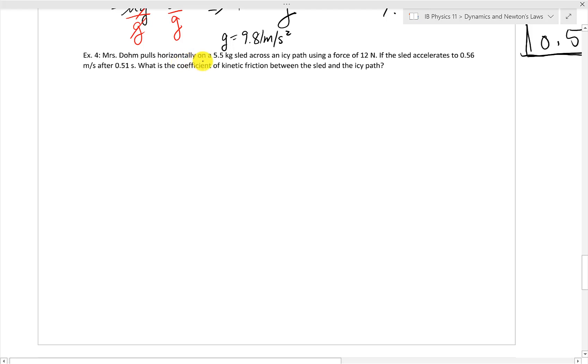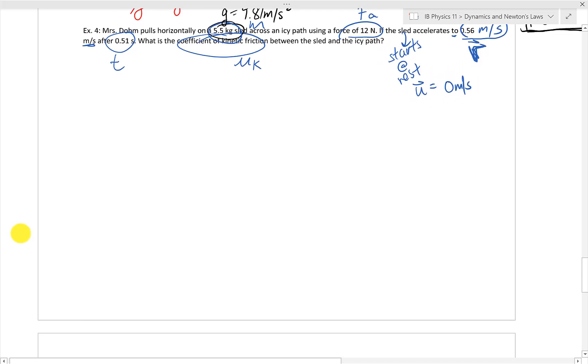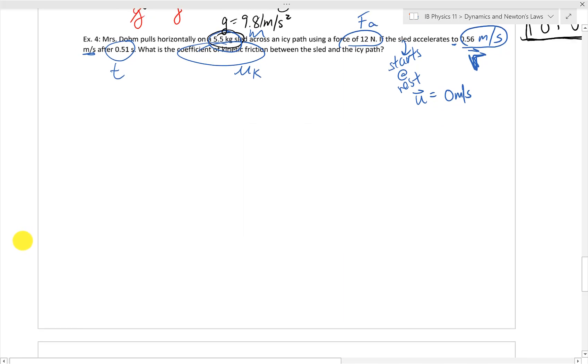Okay, so let's read this problem together just to make sure we have a sense of it. Miss Stone pulls horizontally on a 5.5 kilogram sled, which is going to be our mass on an icy path using a force of 12 newtons. That's our applied force. If the sled accelerates to 0.56 meters per second, so notice that this is a meters per second, this is a speed. And it sounds like it's accelerating to this speed, which it's telling us this is the final velocity here. After 0.51 seconds, that's the time, what is the coefficient of kinetic friction between a sled and the icy path? So you're looking for the mu k, coefficient of kinetic friction. And let's see, the problem doesn't state this, but you can assume that a sled starts off at rest, which then tells you the initial velocity is what? But yes, it's 0 meters per second, okay? So don't forget to draw a free body diagram. Good time to pause the video.